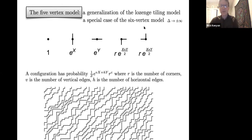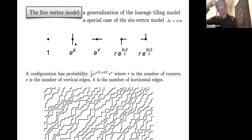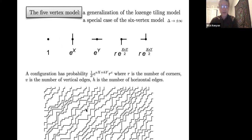It's a special case of the six vertex model where the delta parameter goes to plus or minus infinity. Here's a very simple definition: we take the square grid Z² in the plane, or some subgraph of it, and at each vertex we have one of five configurations—the empty vertex or the other ones as shown. These form monotone northeast lattice paths which are disjoint from each other.